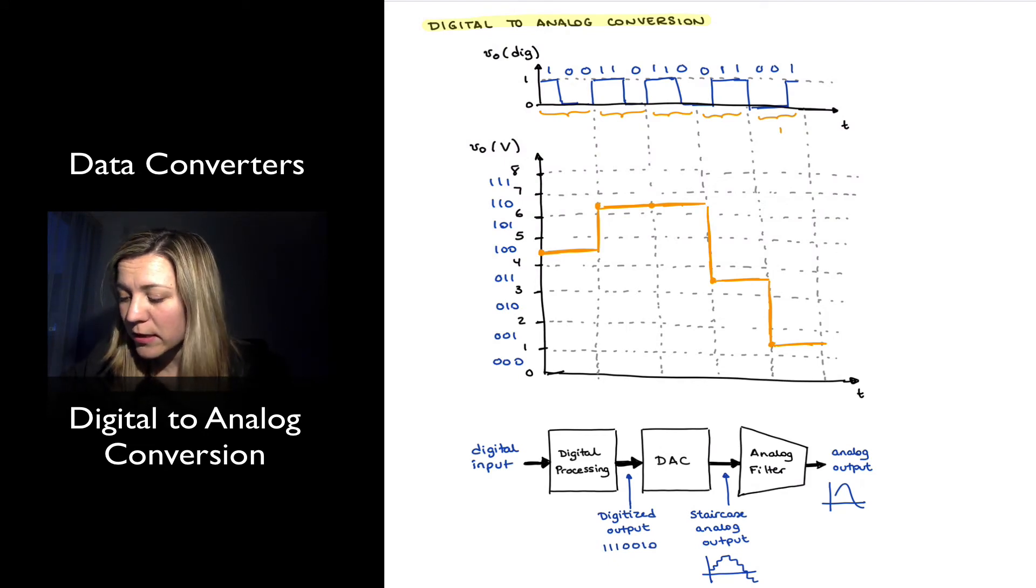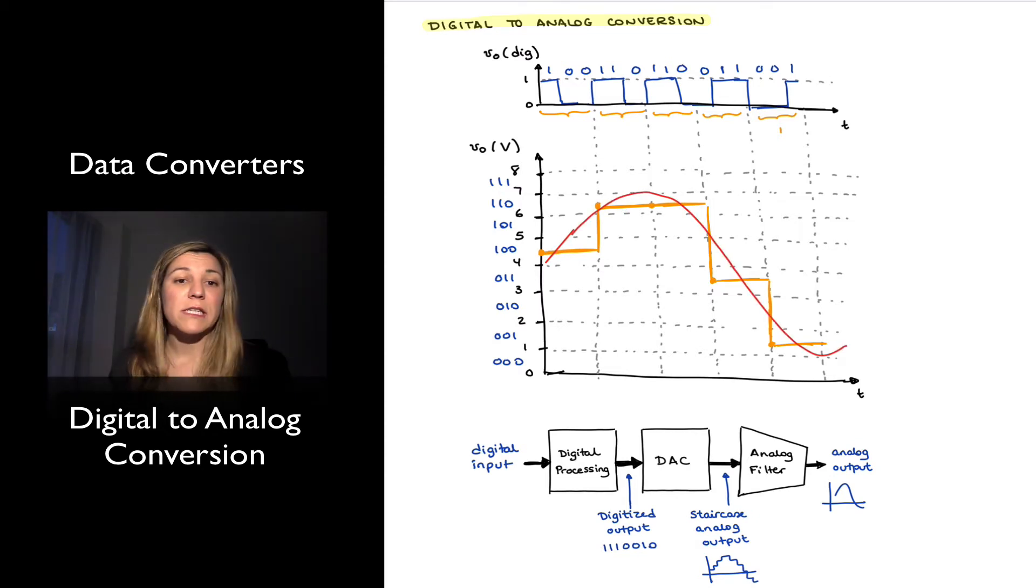Typically also add a delay to it, like any low pass filter would. So that my signal will look like the smooth analog version of the signal that I had originally.